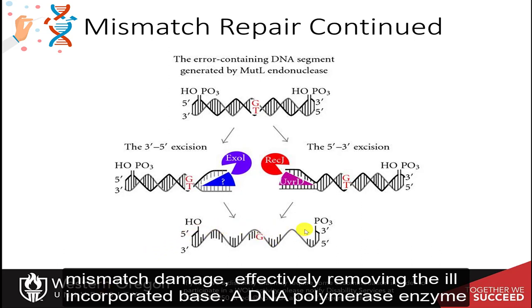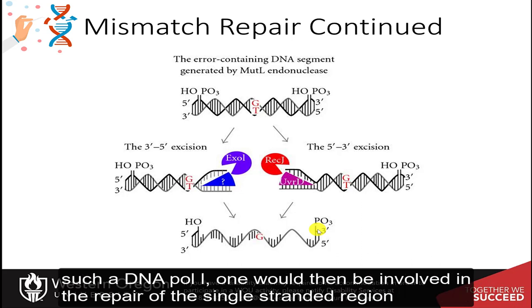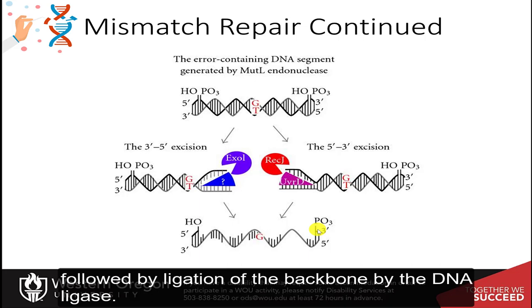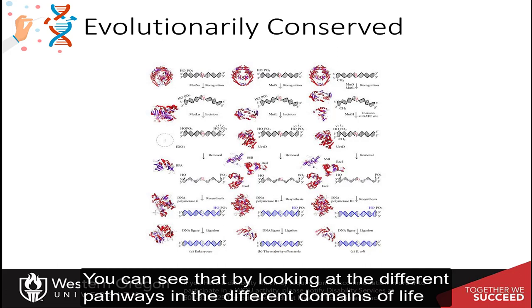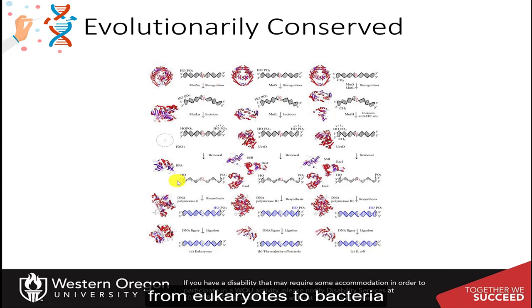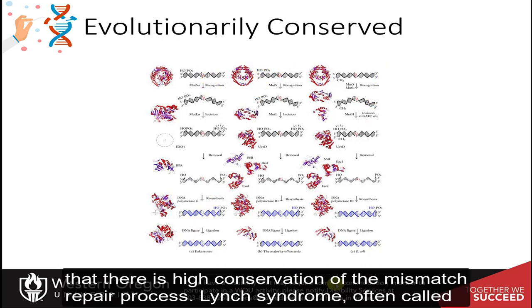A DNA polymerase enzyme, such as DNA Pol I, will then be involved in the repair of the single-stranded region, followed by ligation of the backbone by DNA ligase. You can see that by looking at the different pathways in the different domains of life — from eukaryotes to bacteria — there is high conservation of the mismatch repair process.